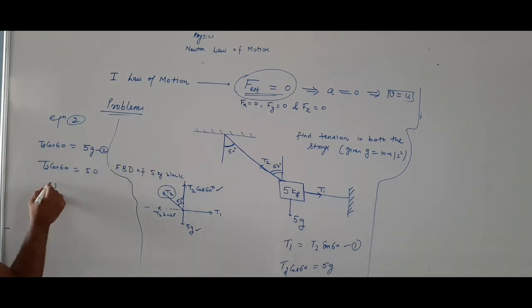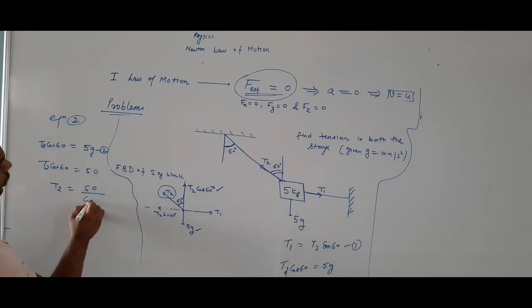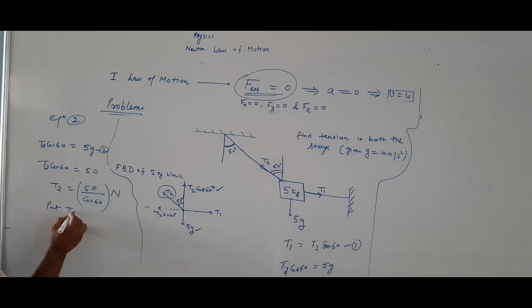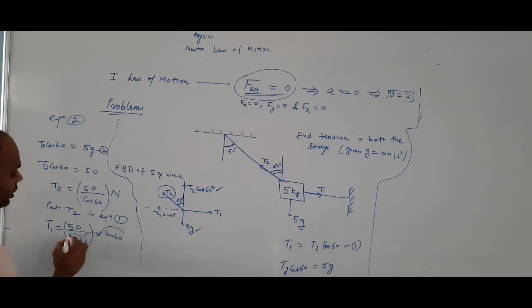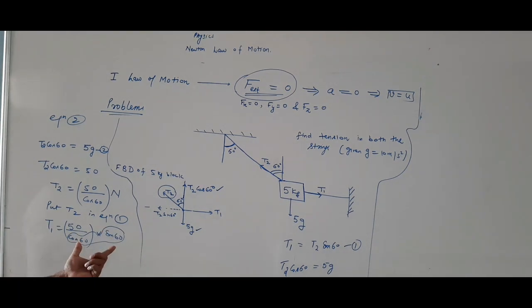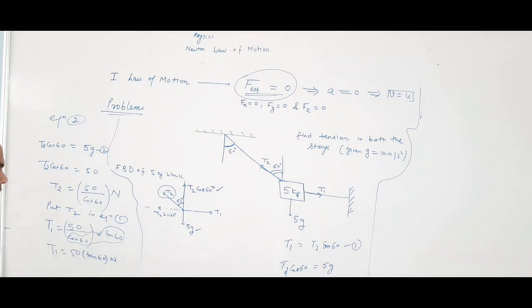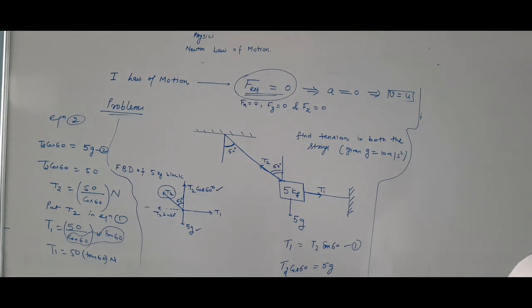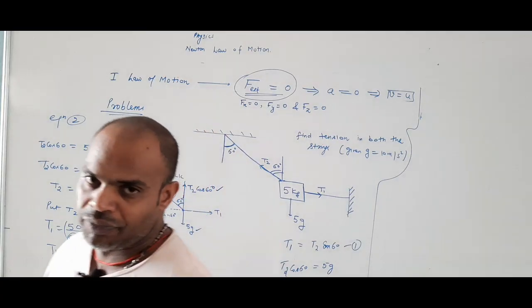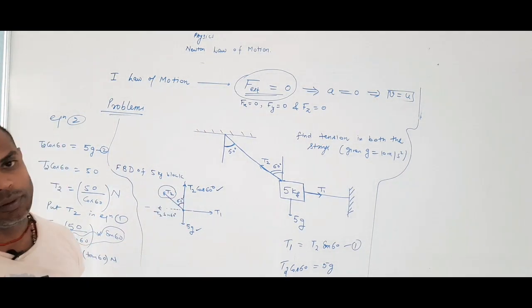T2 cos 60 equals 5g. G is 10, so T2 equals 50 upon cos 60 Newton. Substitute this value into equation 1: T1 equals (50 upon cos 60) into sin 60, which simplifies to 50 into tan 60, giving T1 equals 50 root 3 Newton. You can substitute the values of cos 60 and sin 60 to get the solution.